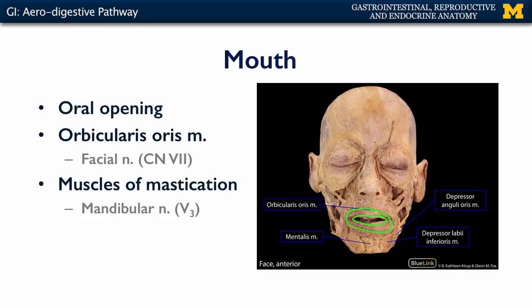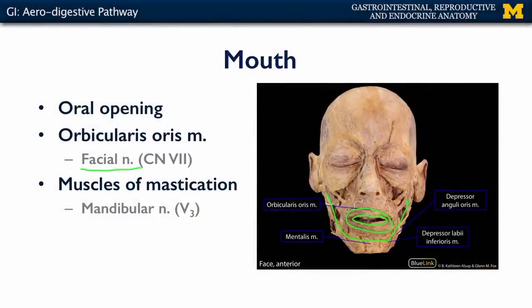The oral opening can be further modified by other muscles of facial expression. All of these muscles are under control of cranial nerve 7, or the facial nerve. In order to move the mandible or to participate in a process known as mastication, we need innervation from another nerve — the mandibular nerve, commonly known as V3, which is the third portion of the trigeminal nerve or cranial nerve 5.